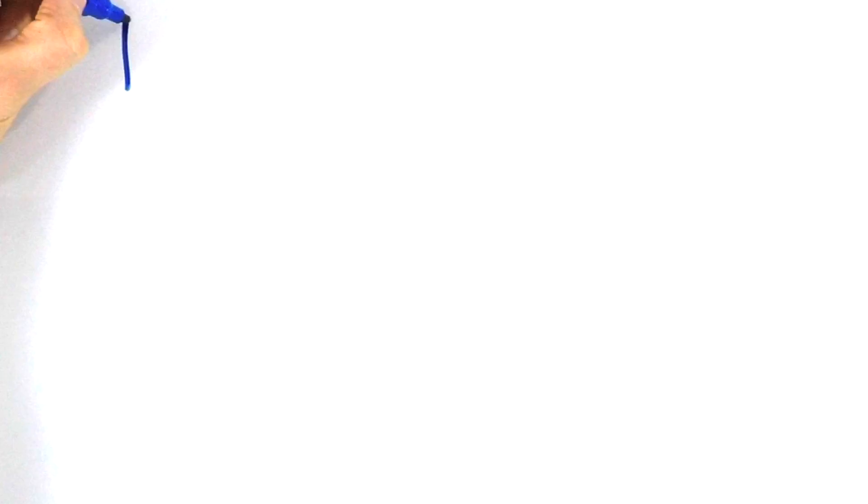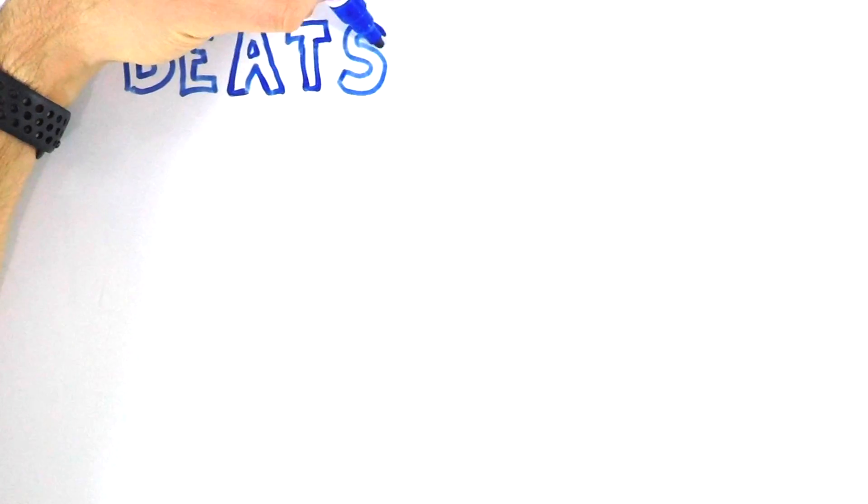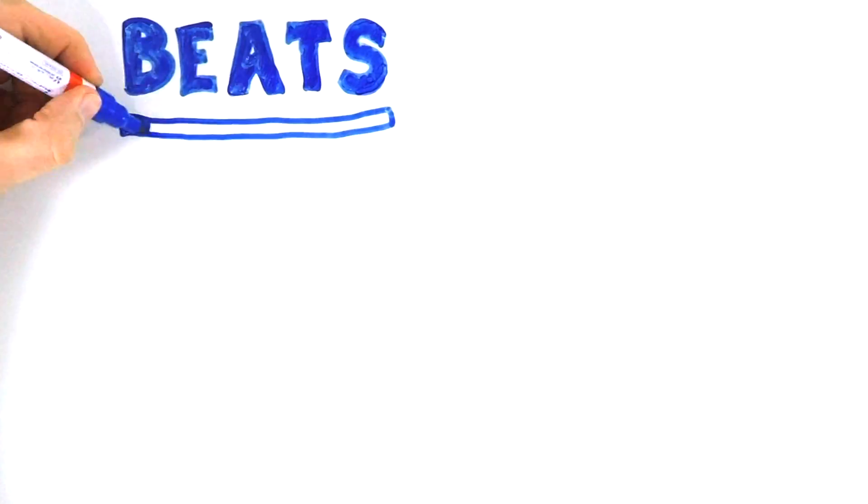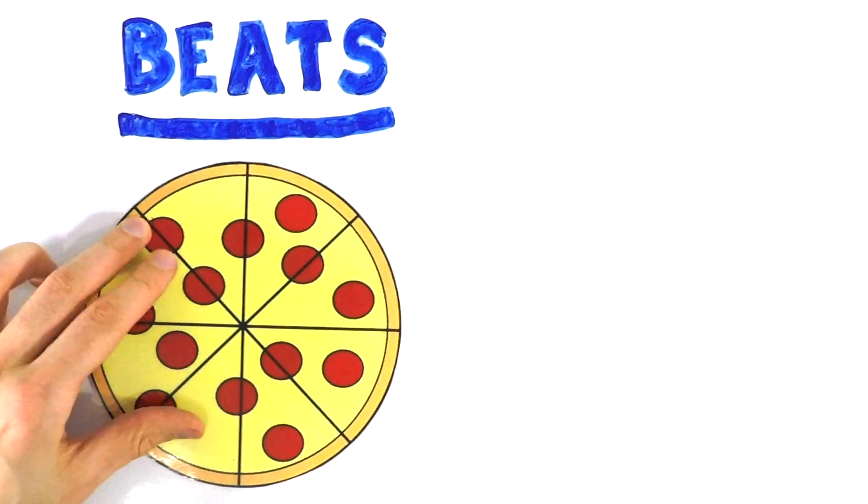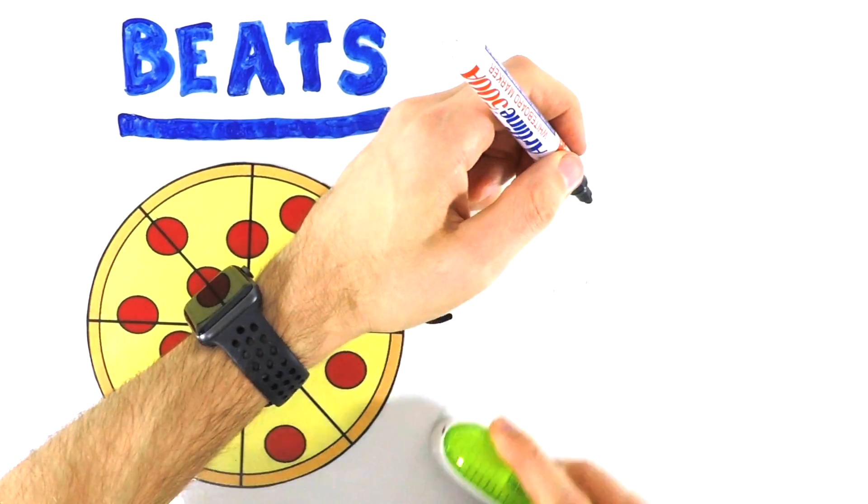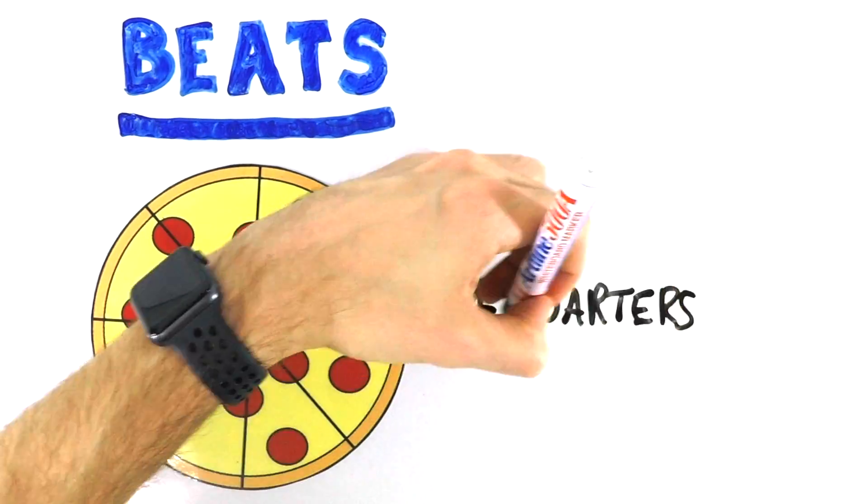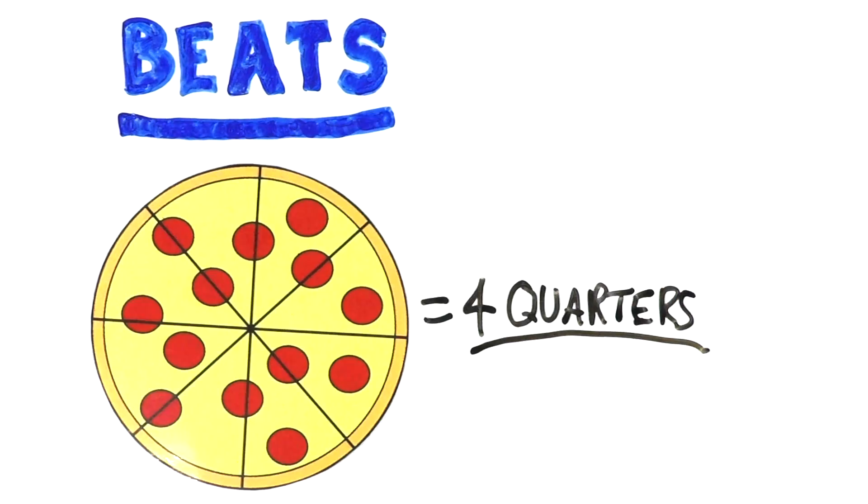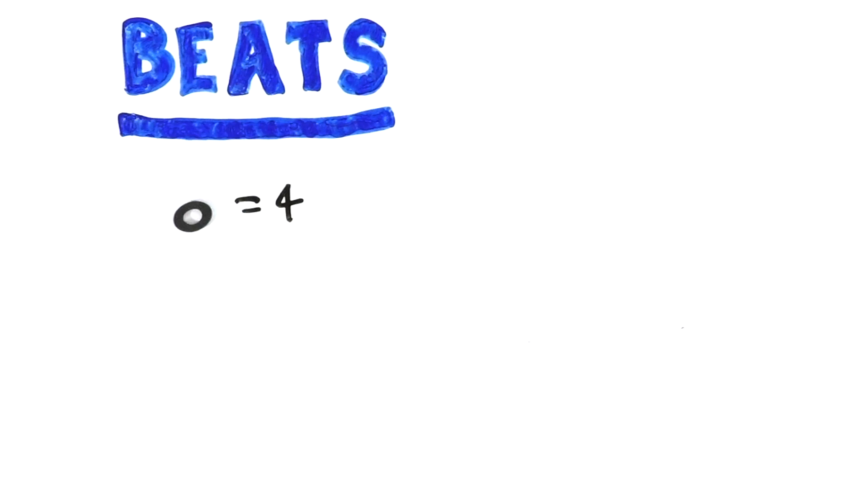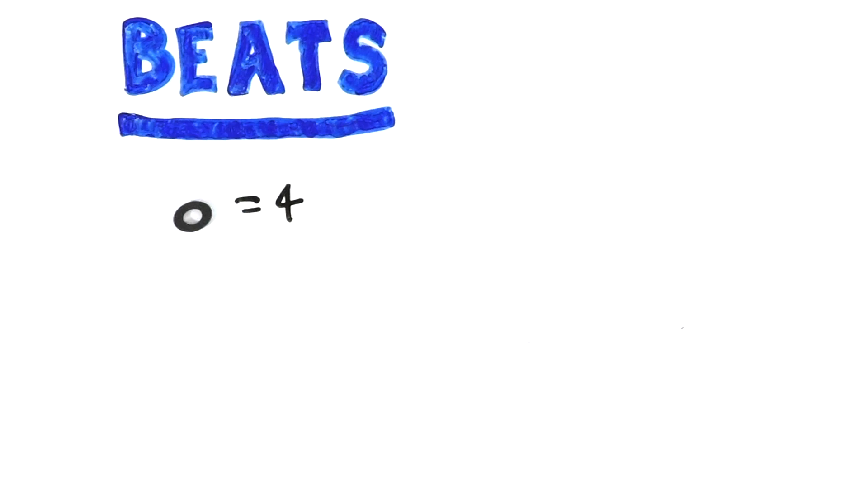But now let's think about why that's the case. So remember last episode we were talking about beats and how each of these different notes can describe how long we hold our sounds for. Now we have to think about the amount of beats each of these notes are worth. So we already know that a whole pizza can break up into four quarters. So we are going to say that a whole pizza equals four and therefore our whole note also equals four.